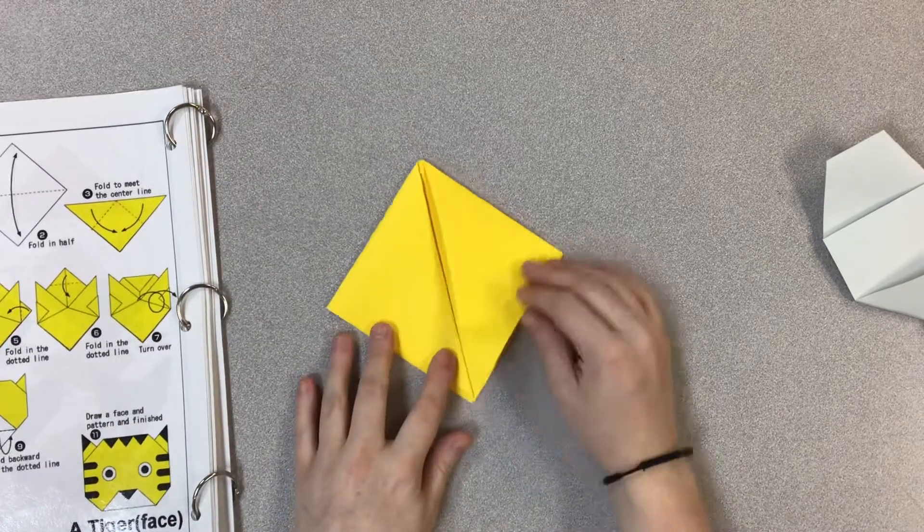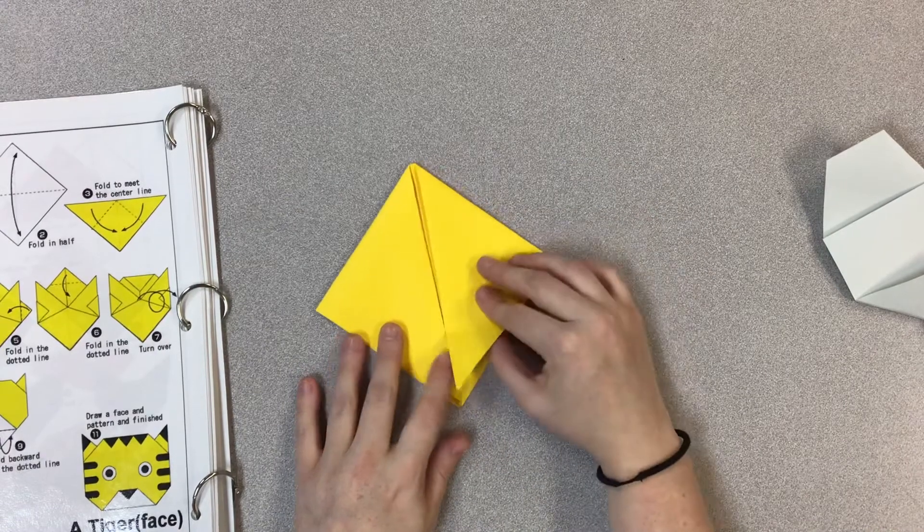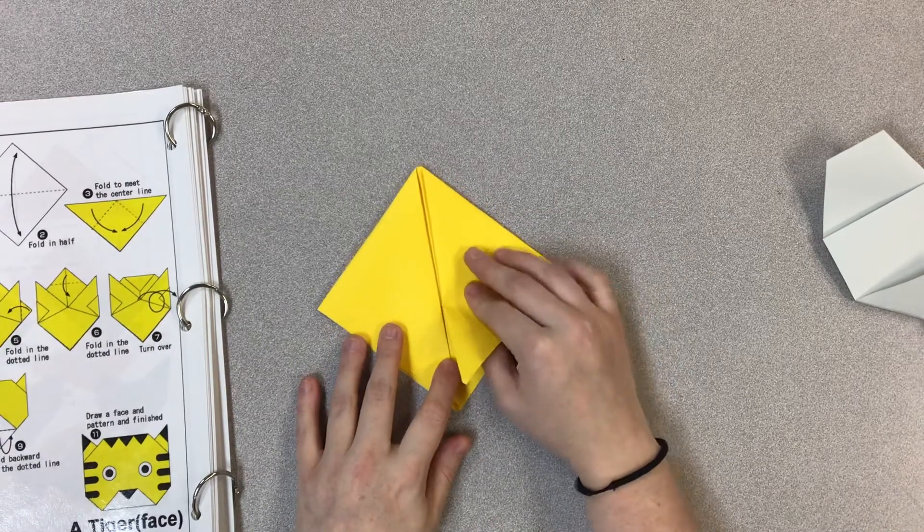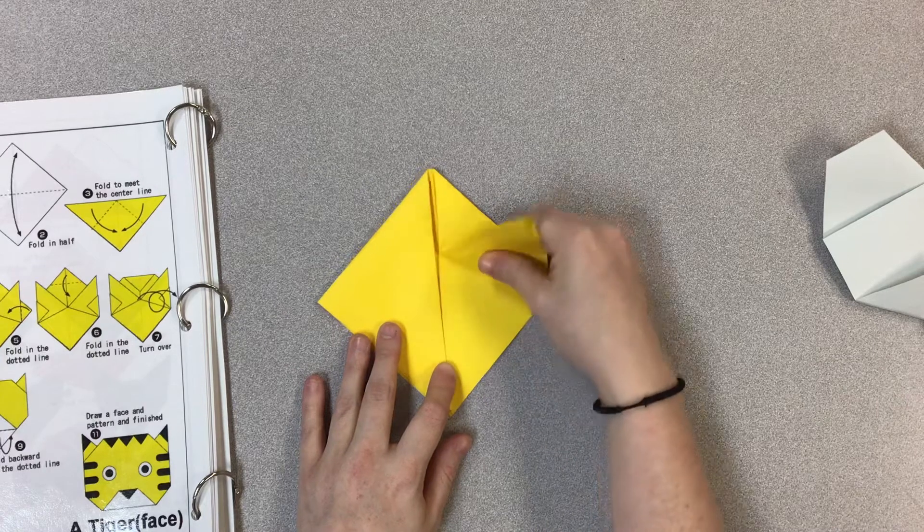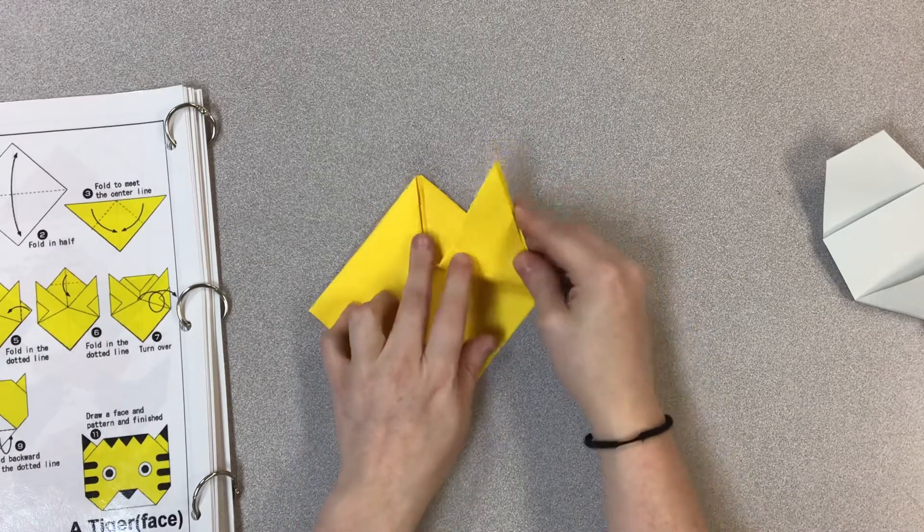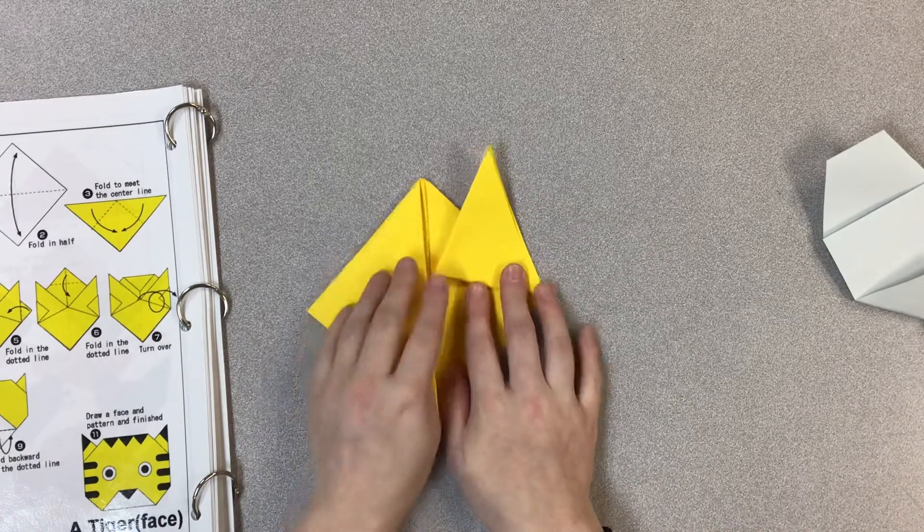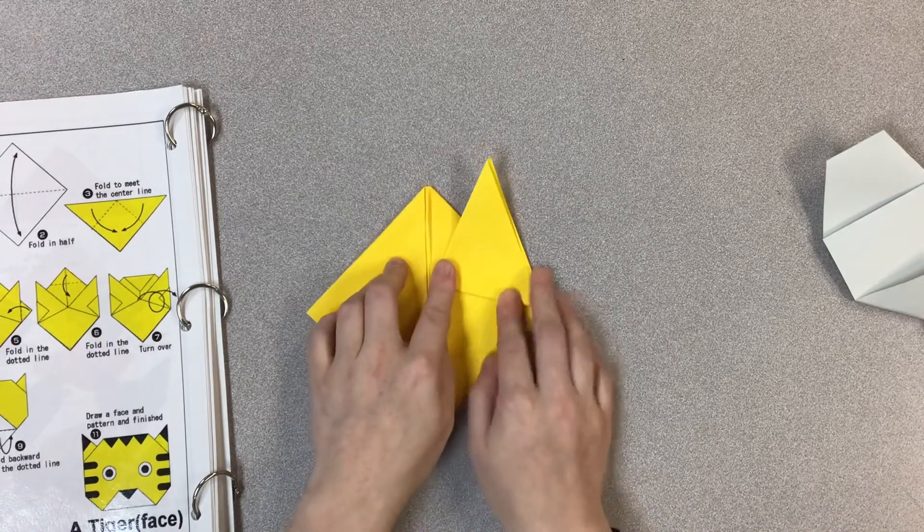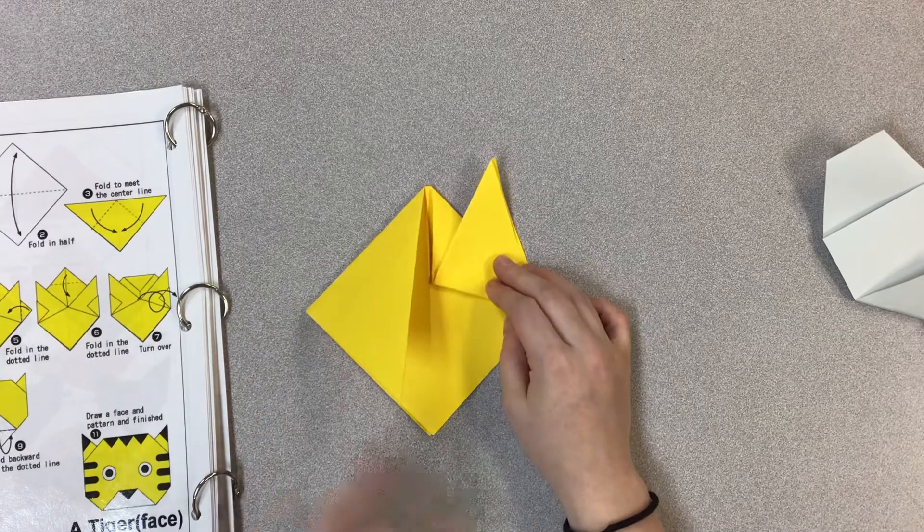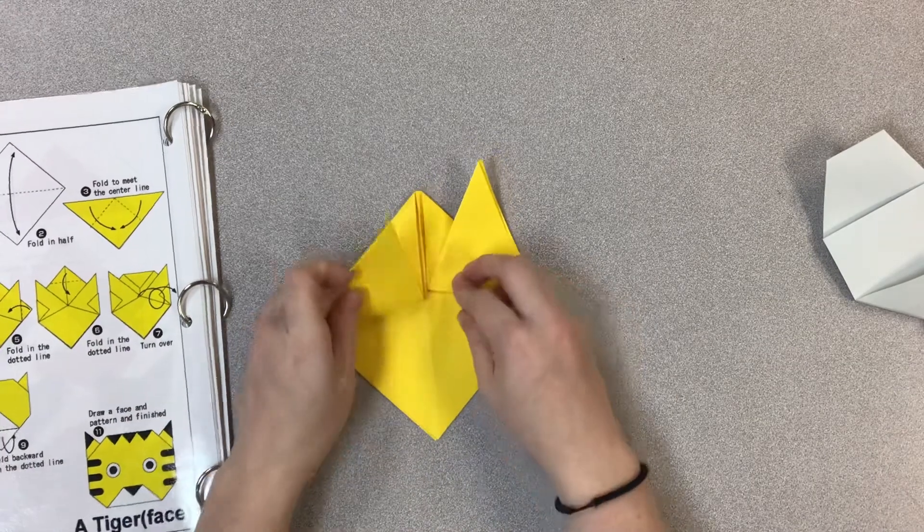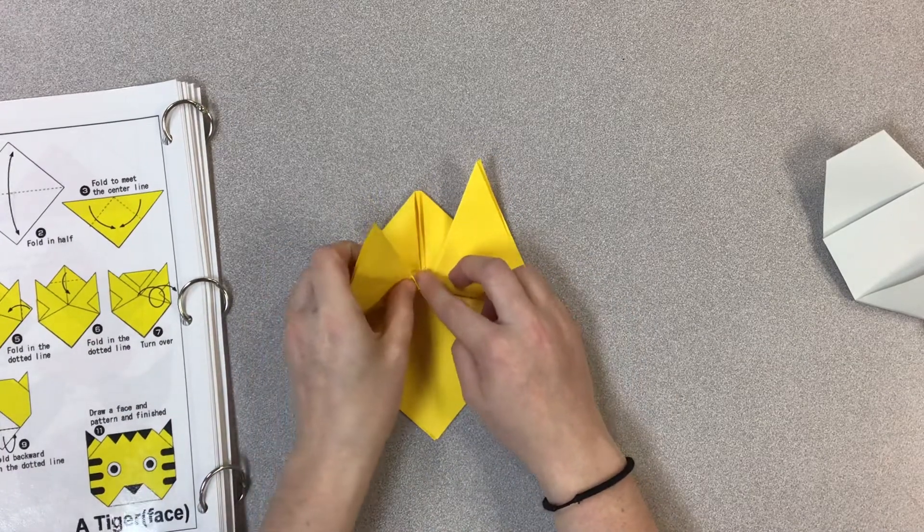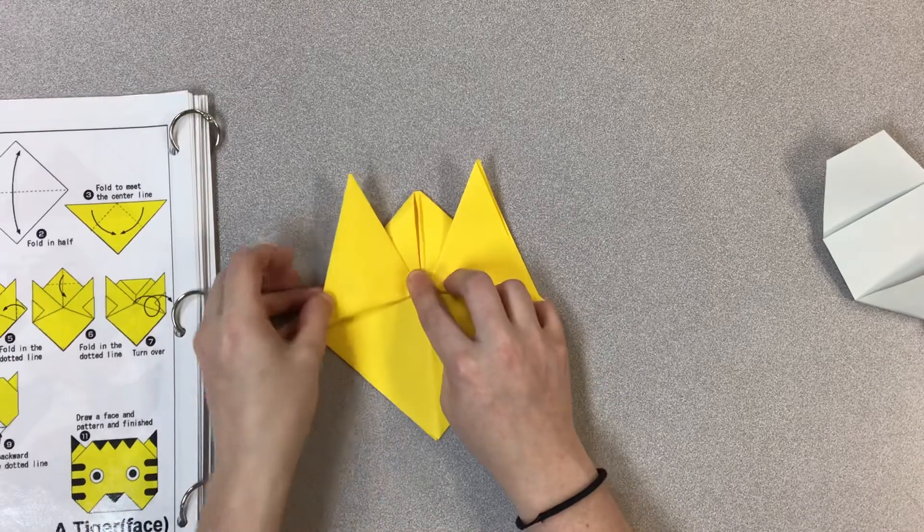Then I'm going to take these little triangle flaps, and I'm going to be creating the ears of the tiger. So I'm going to be flipping them just straight up. And it kind of depends on what kind of ears you want. Then I'm going to try and do the same on the other side so they look the same. And try and fold.